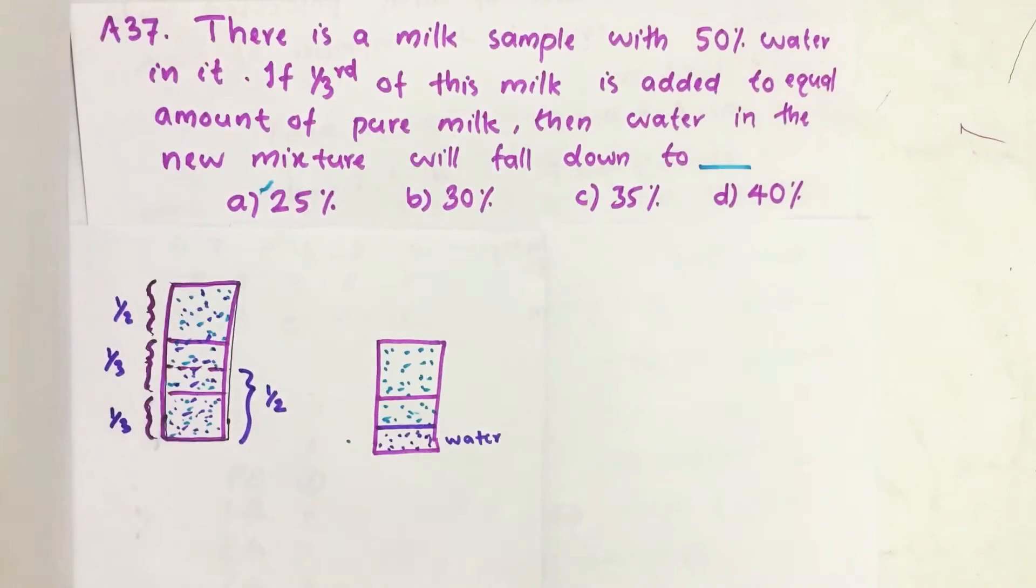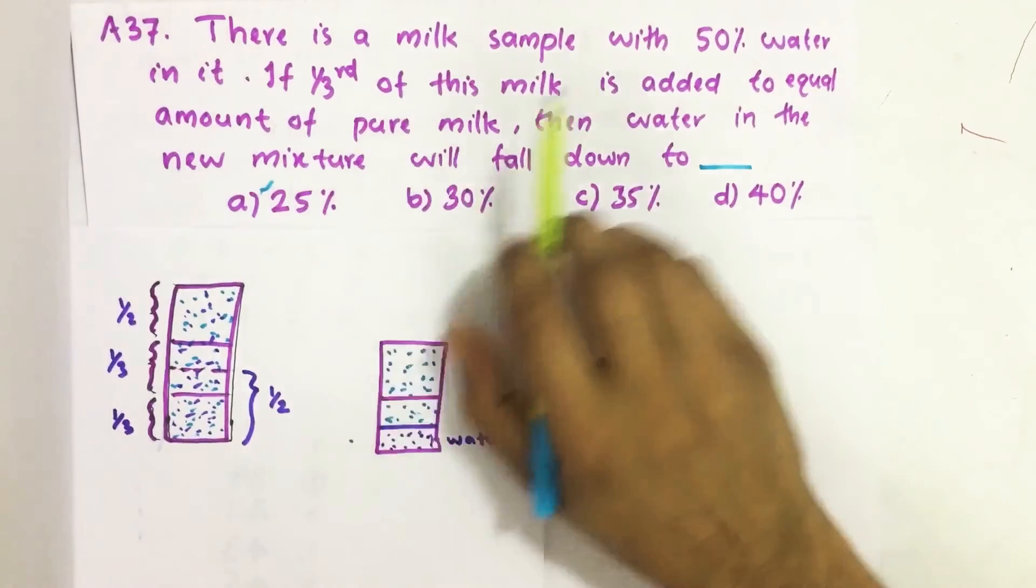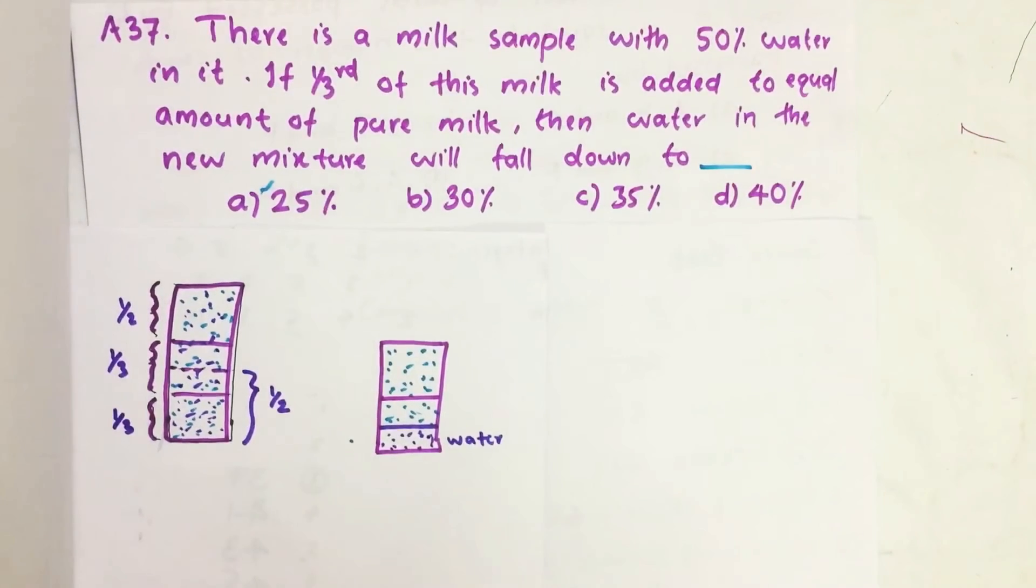Hello everyone, here I am going to solve 2017 CSAT question number 37 from question paper series A. There is a milk sample with 50 percent water in it.